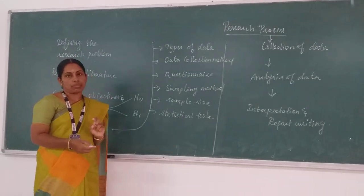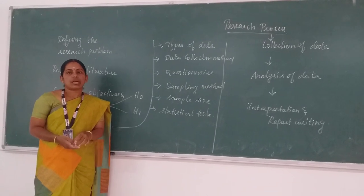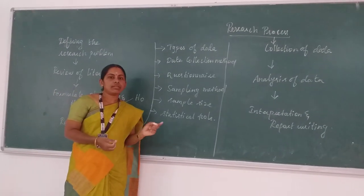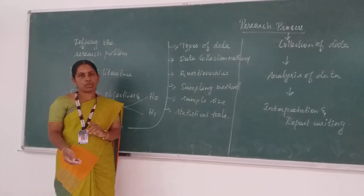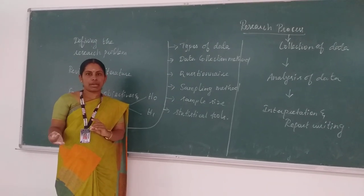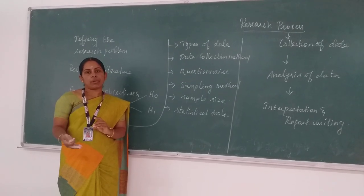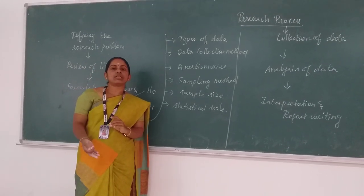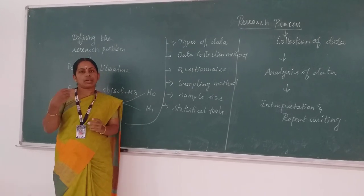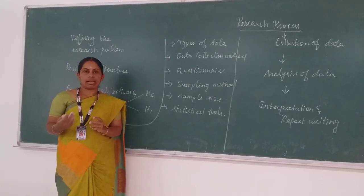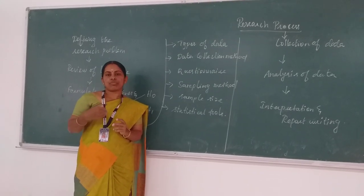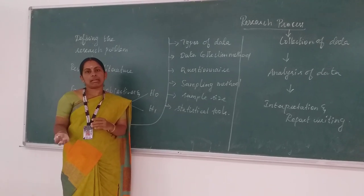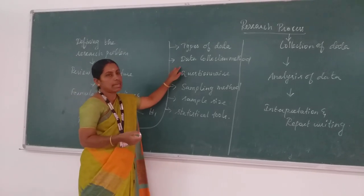After determining the type of data, we go to choose the data collection method. We have many data collection methods. Some of them are: the observation method, personal interview method, telephone interview method, then questionnaire and schedule. In observation, the researcher observes the attitude and behavior of the respondent and collects information. In personal interview, we meet the respondent personally and collect the information. In telephone interview, the researcher contacts the respondent by phone to collect the data. If you choose questionnaire or schedule, we frame it in a systematic manner and collect data directly or indirectly.